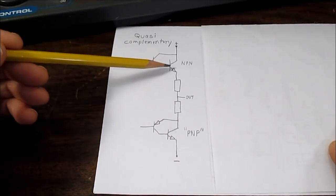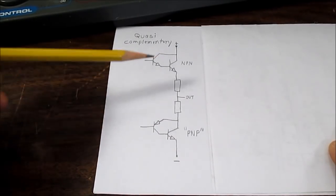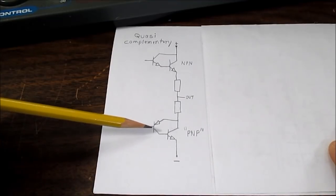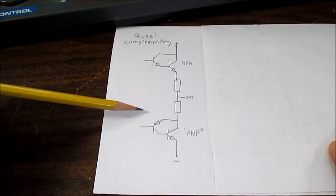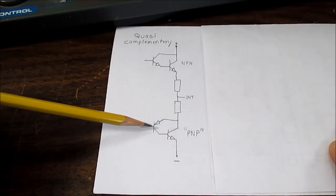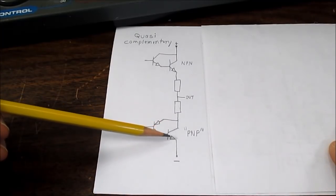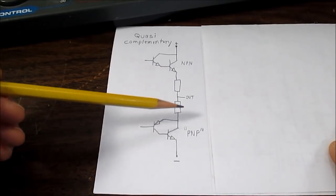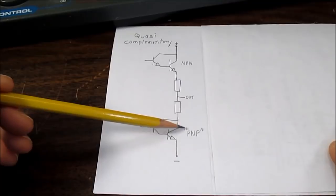So, we have the Darlington stage up here in the upper part. And the lower part, we used the complementary feedback pair. And again, because the circuit behaves as the polarity of its driver, this NPN acted as a PNP, so I put it in quotes. So, that solved the issue.